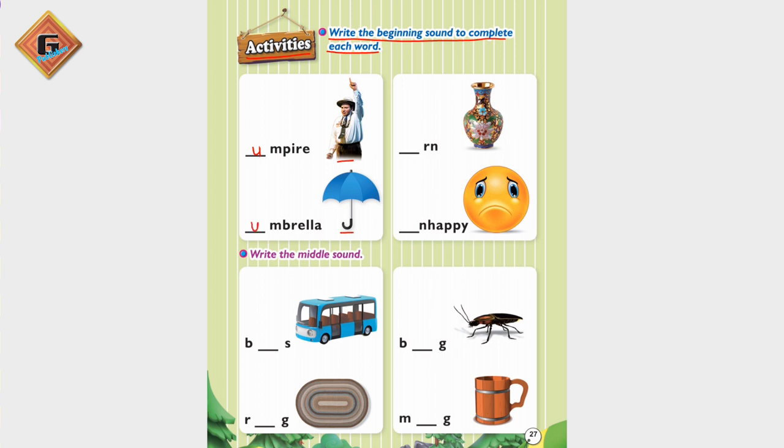What is this last one? This is an urn. And what's this one? U, urn. And last is unhappy. Unhappy.